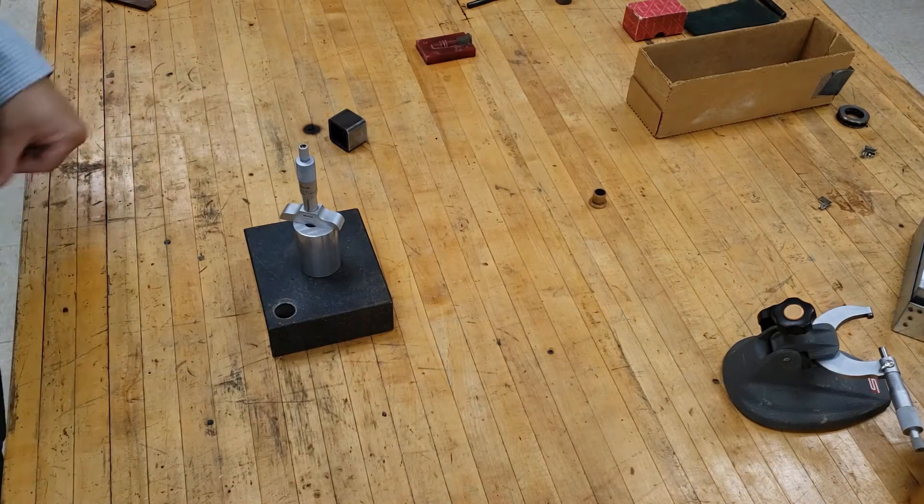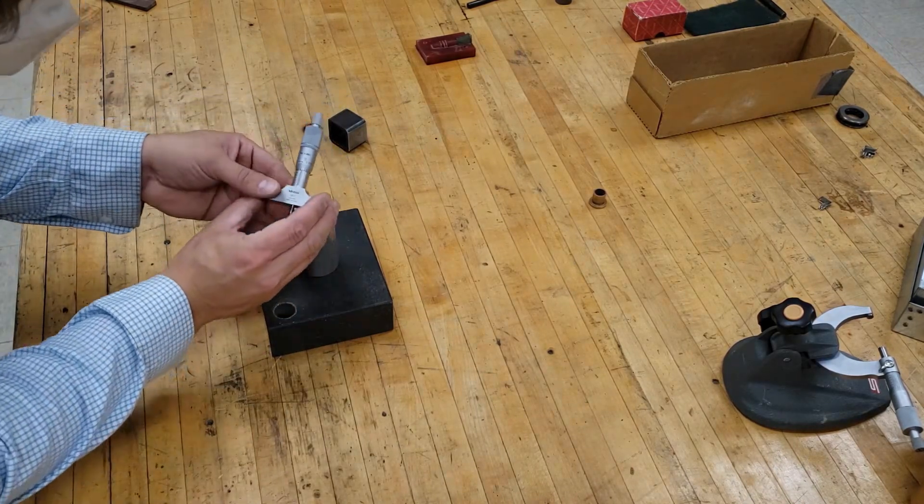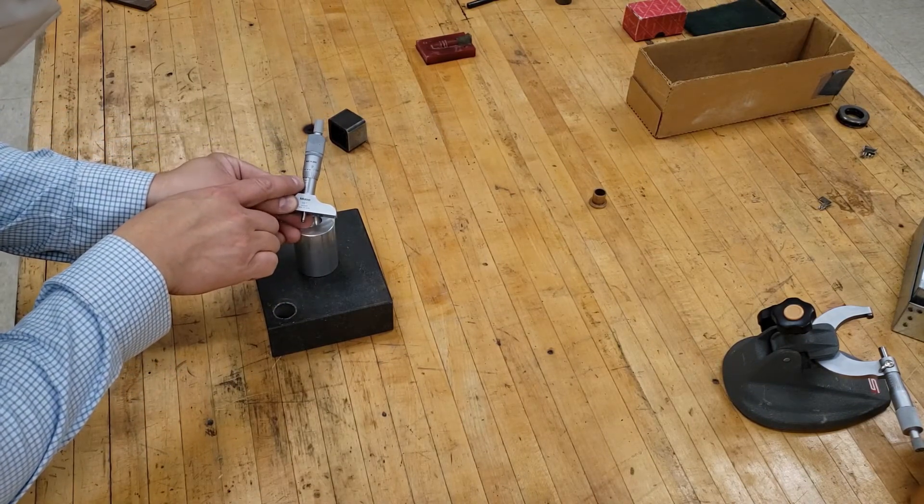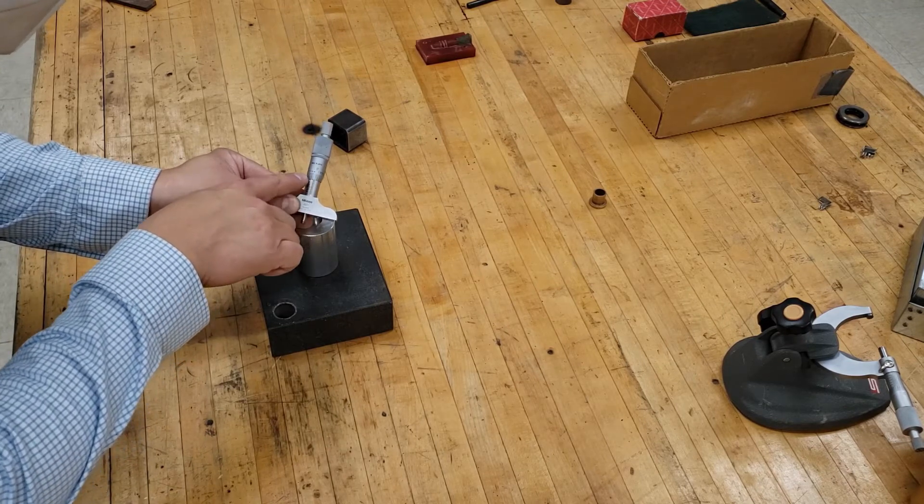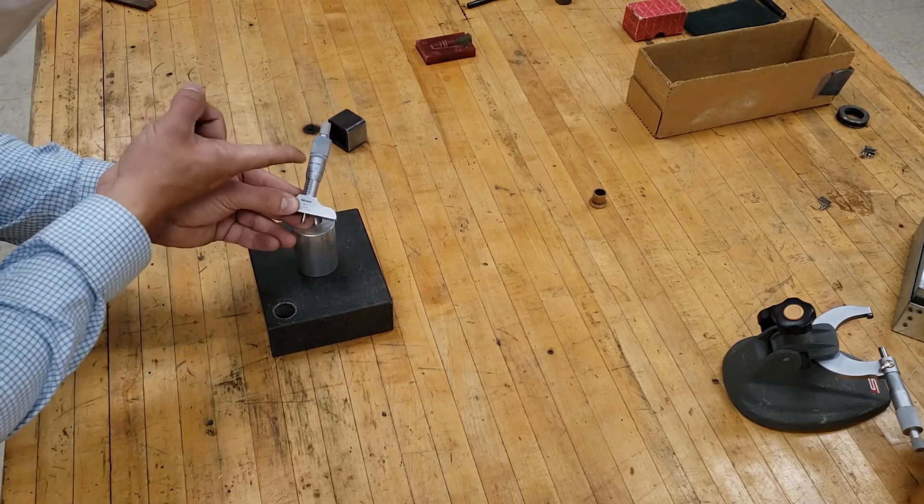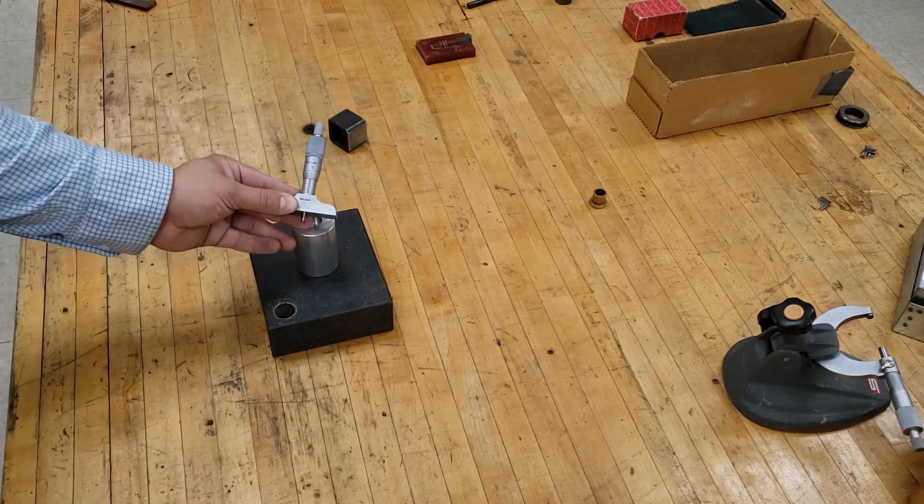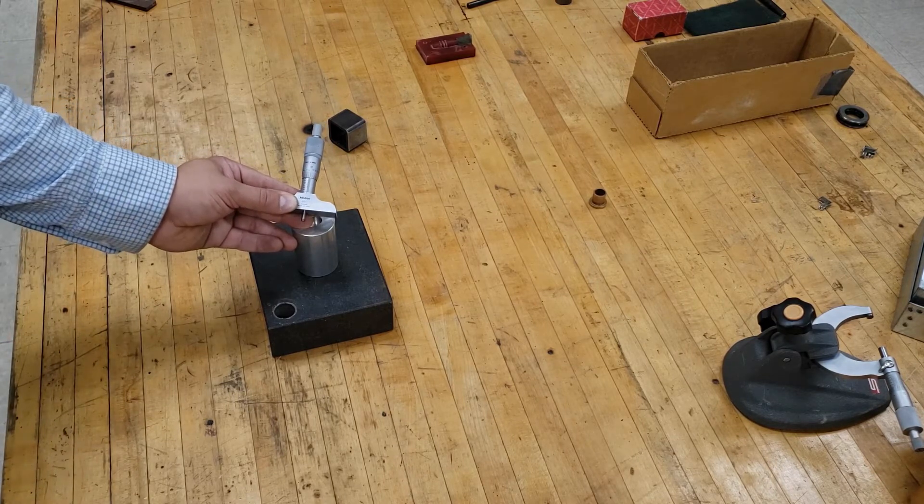In this case, you can see the 4 and the 5. That doesn't mean that this is 400-some-thousandths. It means it's actually 300-some-thousandths and very close to 400-thousandths, but not there yet. So make sure that you're paying attention when you read the depth micrometer.